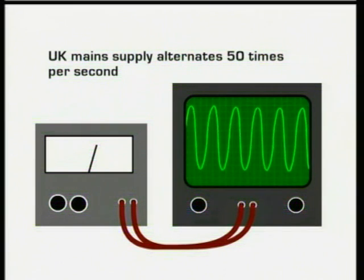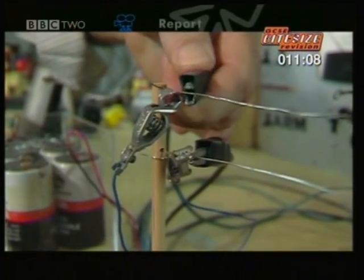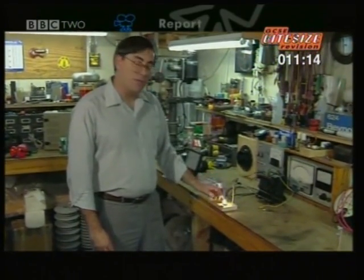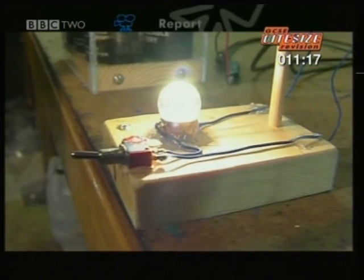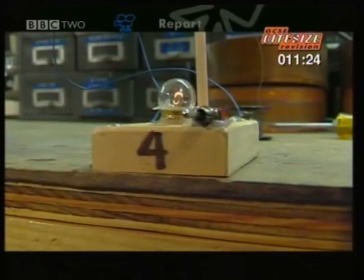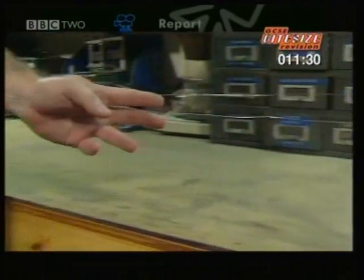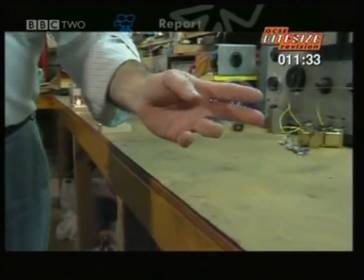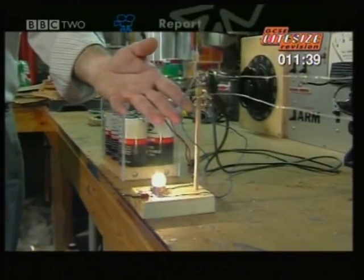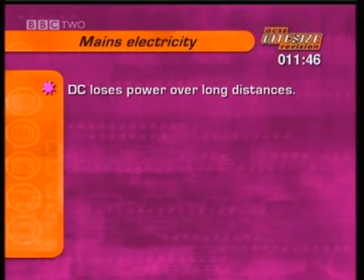But why is alternating current used for our mains supply? There's a fundamental difficulty with transmitting direct current — over long lines, the electricity is slowly lost. The first user has plenty of energy, but as you move further down the line, less and less energy is available to the user. This electricity has gone in the form of heat, heating the electrical lines themselves. Therefore, the electricity is not available to the end user on a long line. So the problem with DC supply is that it loses power over long distances.